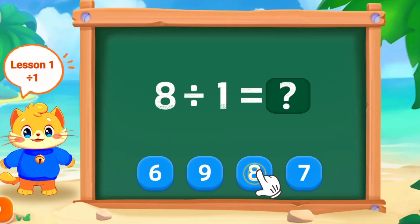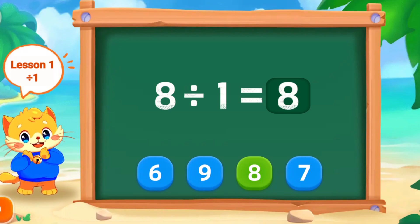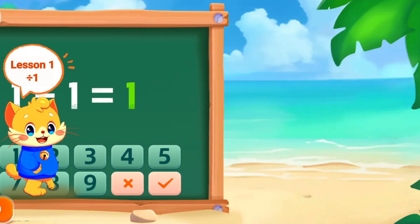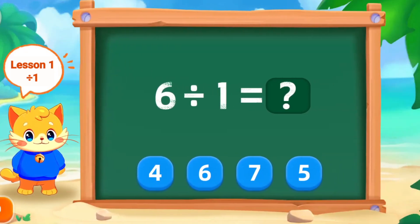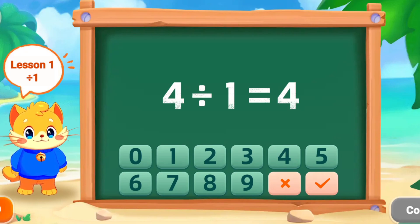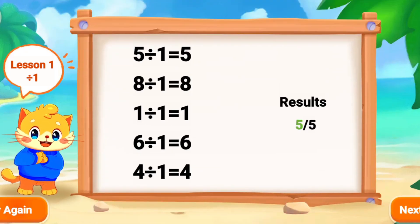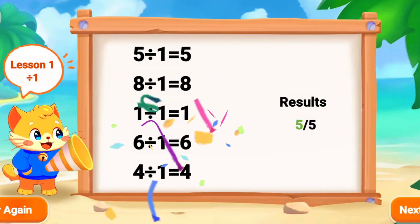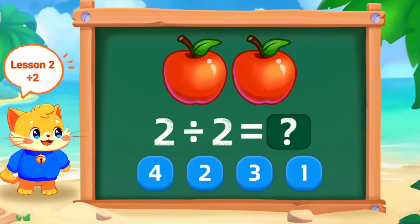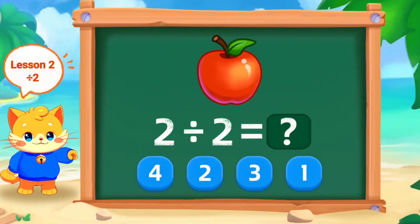Select the correct number. Wonderful. Perfect. Good work. Good work. Perfect. 2 divided by 2 is 1. Wonderful.